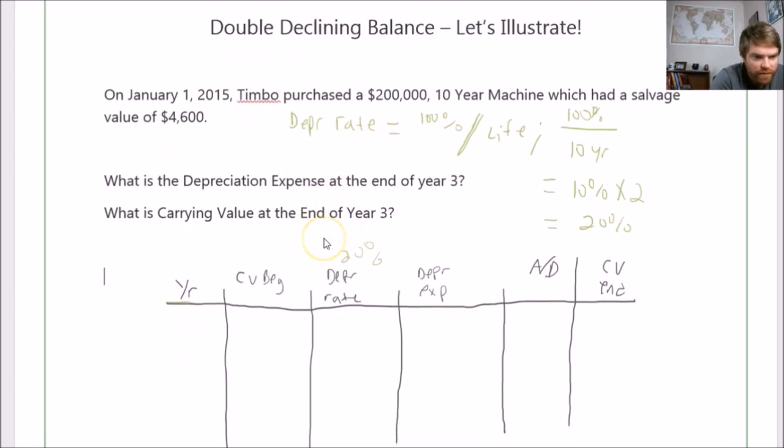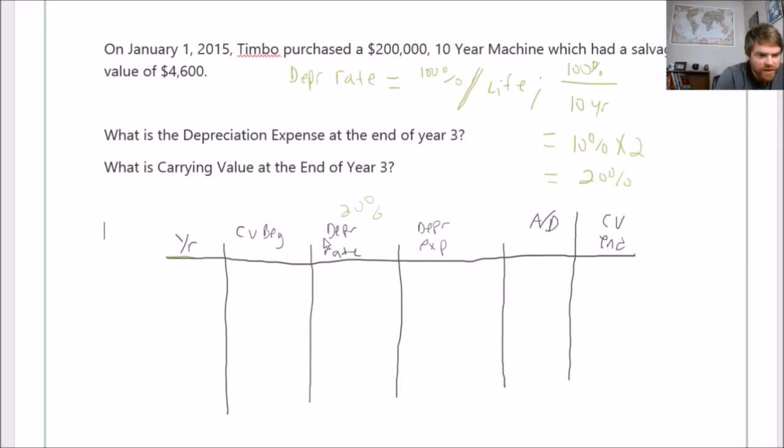Now we can move forward. Year one, the first year is always going to be at the very beginning, 1/1/15. Carrying value at the beginning is the beginning amount, just $200,000. We use the depreciation rate which is 20%, and we figure out what it is for the first year. Well, $200,000 times 20% is $40,000. That's your depreciation expense for that first year.